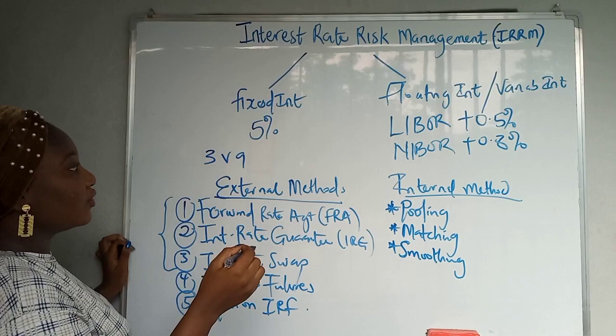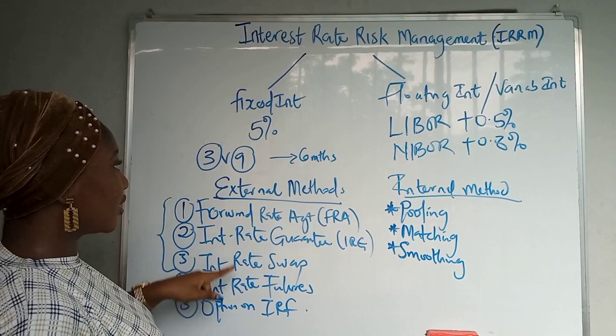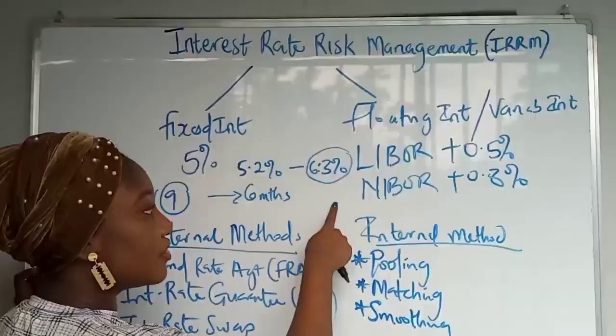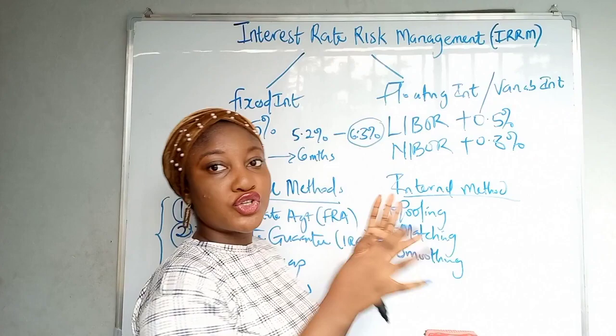In a question you might see something like 'three versus nine' — this means the loan is going to start in three months time and end in nine months time, so the loan is for six months. When solving questions, a FRA of three versus nine might show two rates, for example 5.2 percent to 6.3 percent. You pick the higher rate because that rate relates to borrowing, and the lower rate relates to investment.